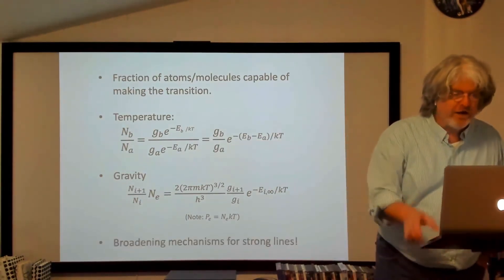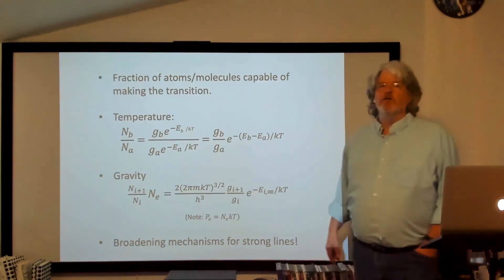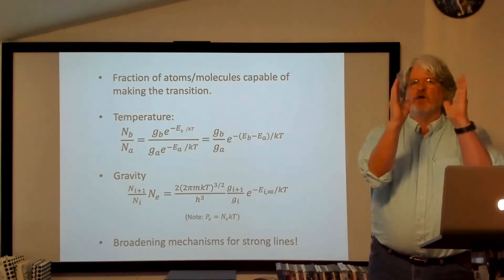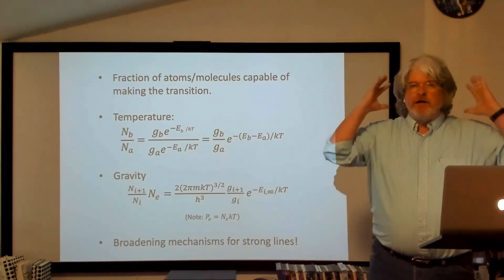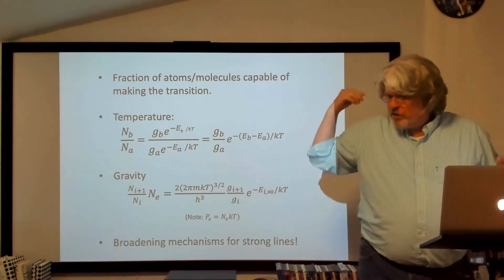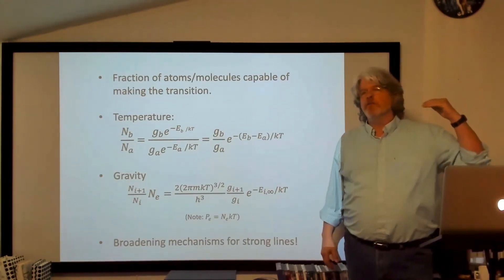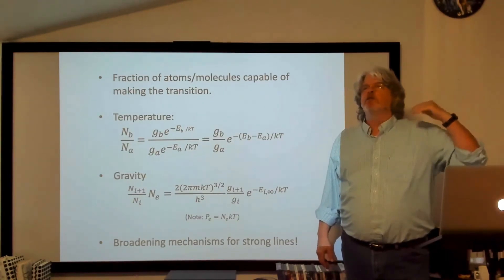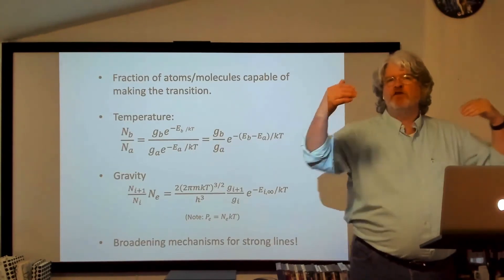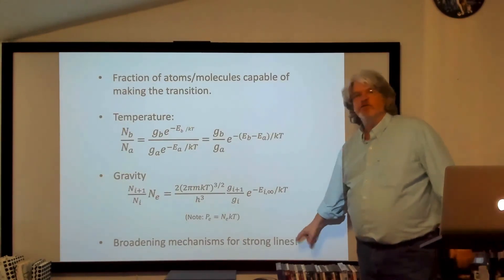The other thing to worry about is the effect of broadening mechanisms, especially in very strong lines. If you've got Doppler broadening — atoms moving towards you absorbing at slightly bluer wavelengths, atoms moving away absorbing at longer wavelengths — for particularly strong lines, you get extra absorption from atoms moving towards and away from you due to the broadening mechanisms themselves.